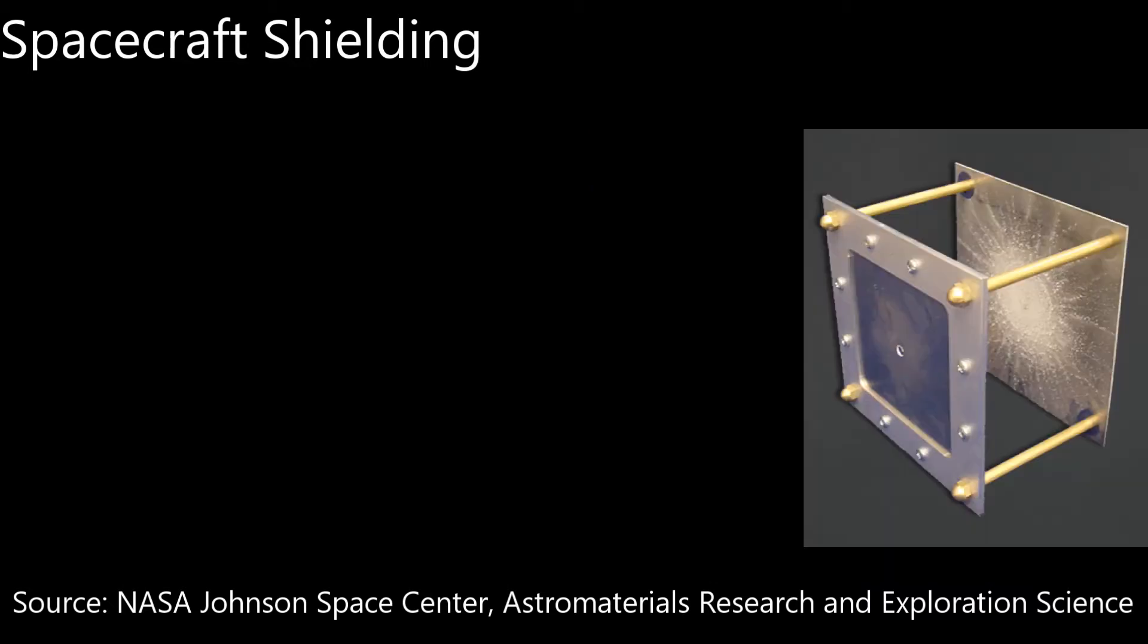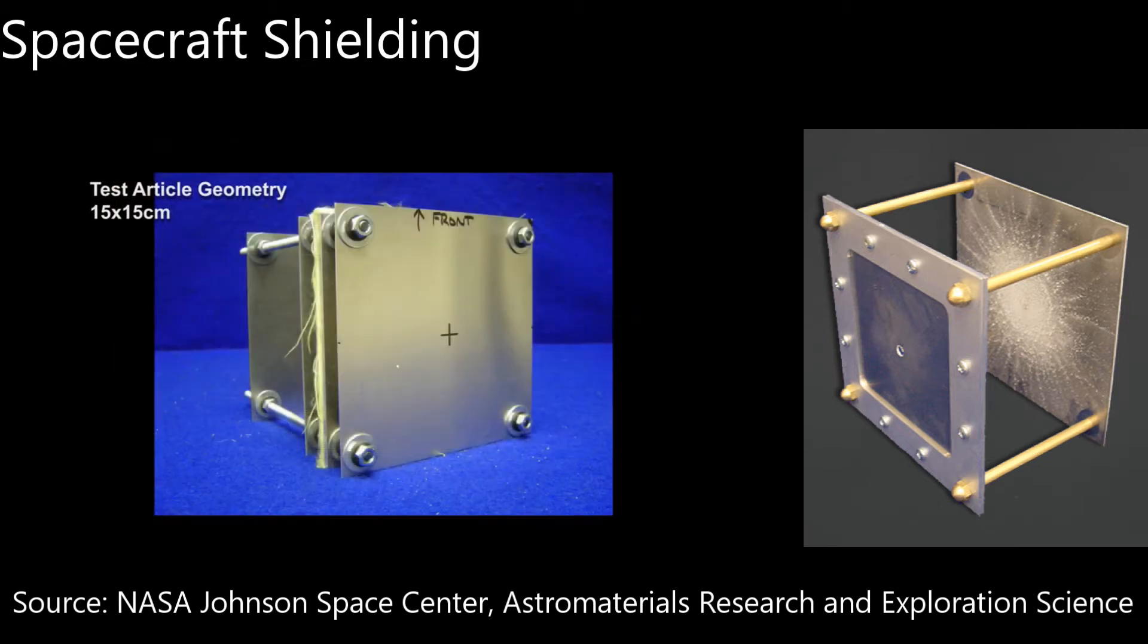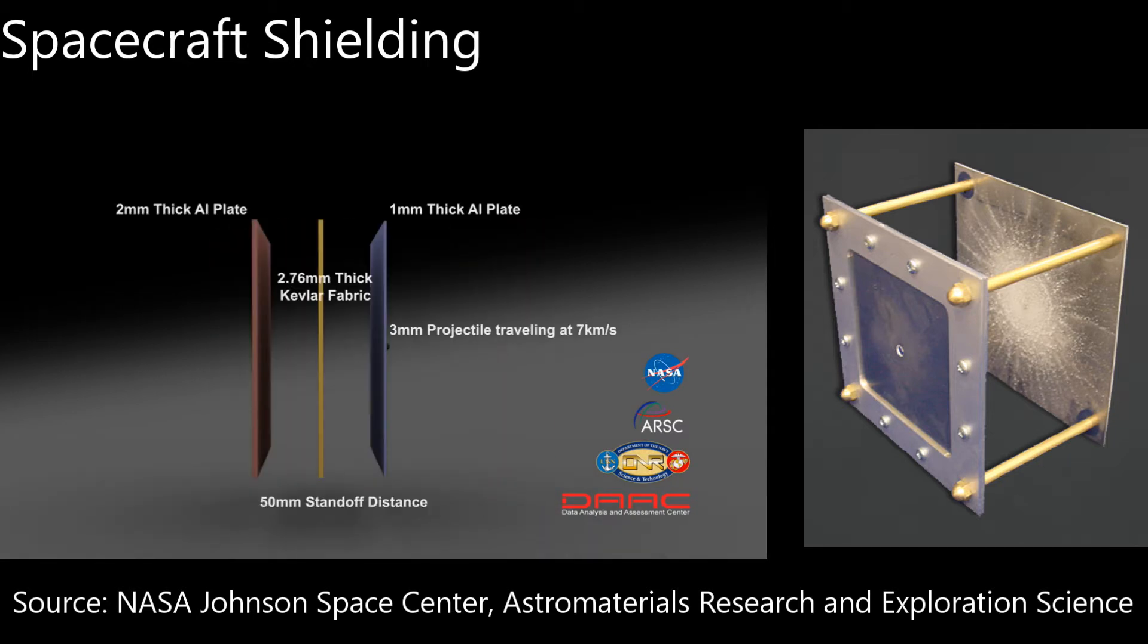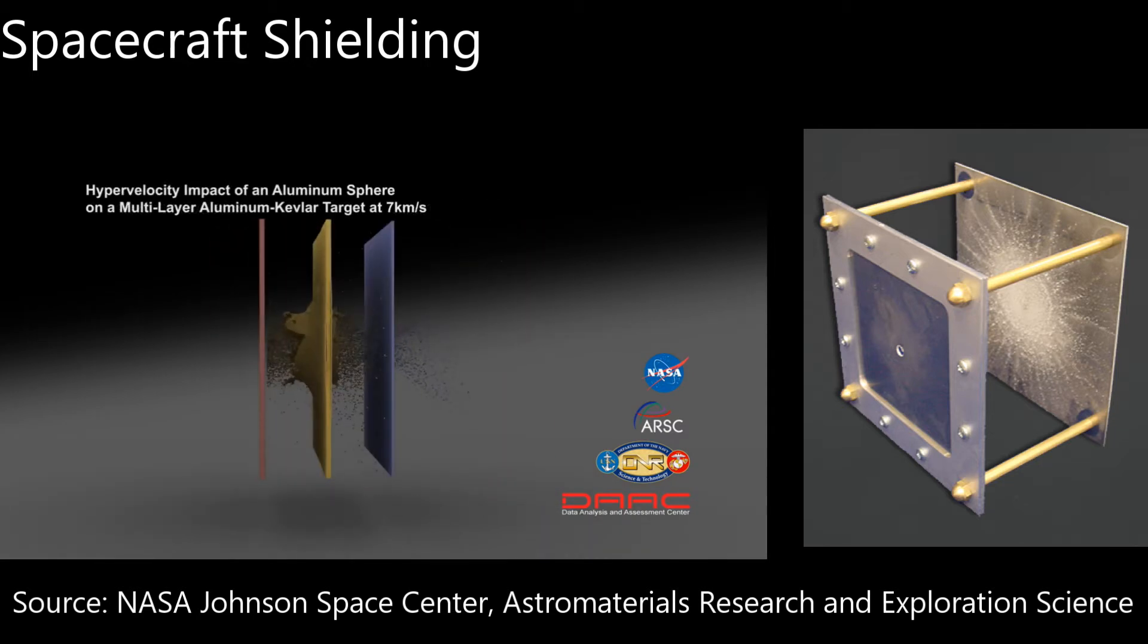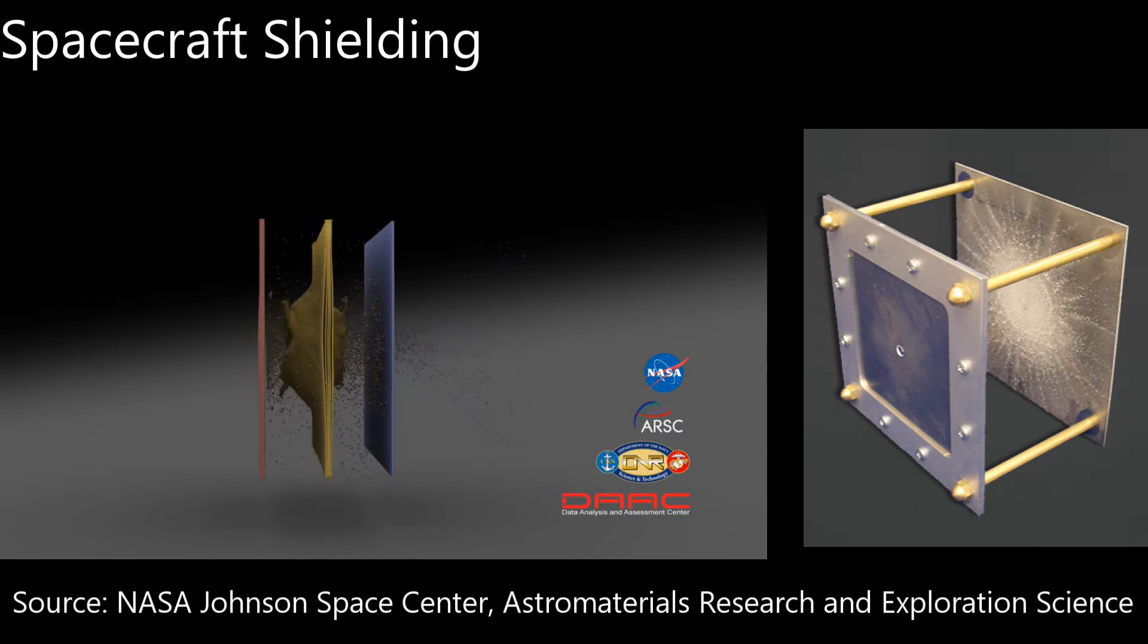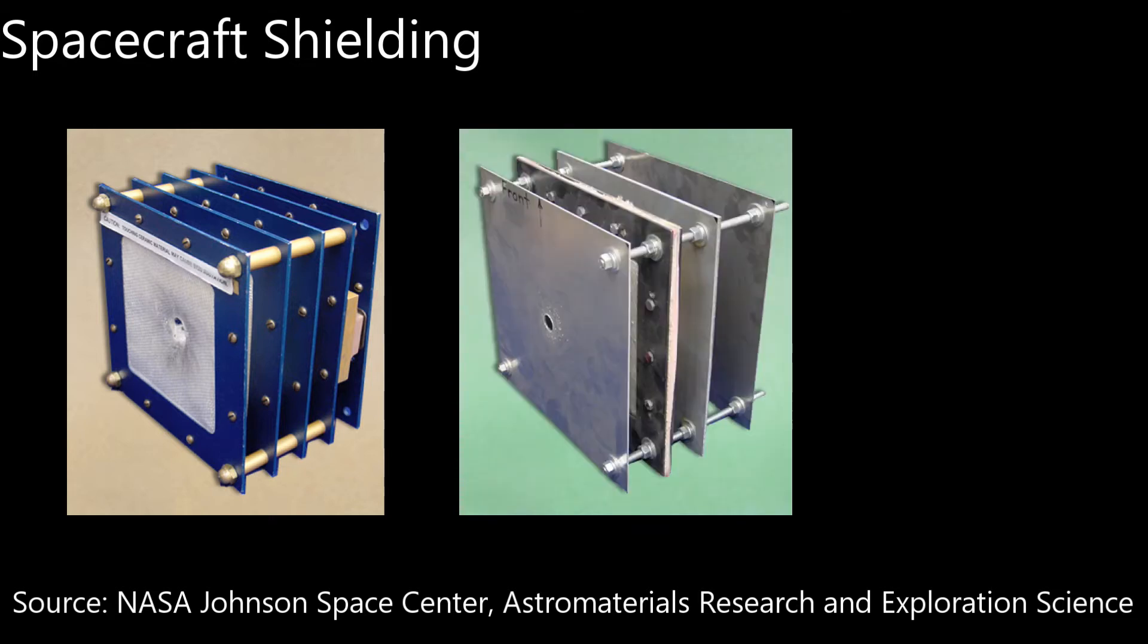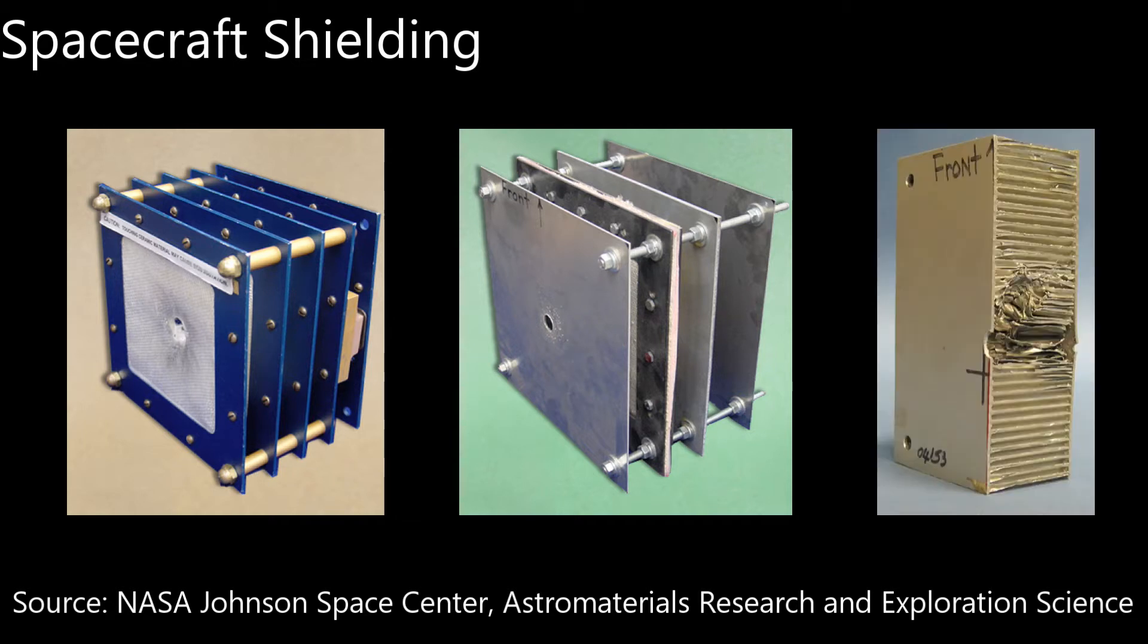Later on, the Whipple shield was introduced where a sacrificial bumper at the front of the spacecraft absorbs the initial impact and breaks down the impacting object with the real wall used to contain the smaller break of debris created. Different implementations of the Whipple shield, such as the multi-shock and stuffed Whipple shields, have also been implemented, along with honeycomb panels which are particularly stiff due to their special structure.